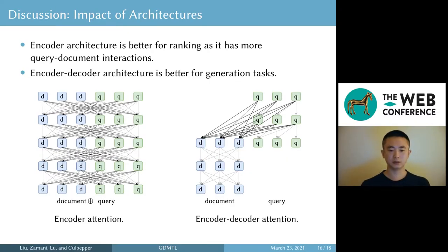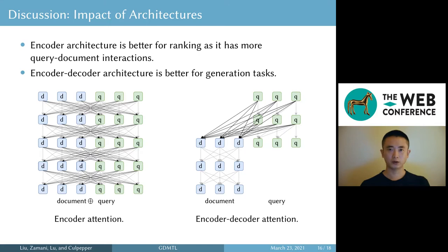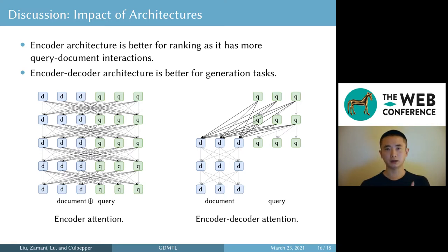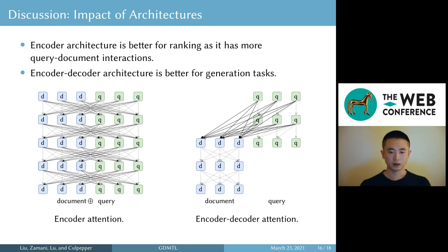Finally, let's discuss the impact of architecture choice. In our experiments, we find that encoders are generally better at ranking than encoder-decoders. This can be explained by the different amount of query-document interactions within each architecture — on the left we can see more lines between different colors representing query-document interactions, and our analysis shows this is the key element that makes encoder-based ranking models so powerful. Encoder-decoders are still very interesting; how ranking impacts generation quality is another promising research direction.